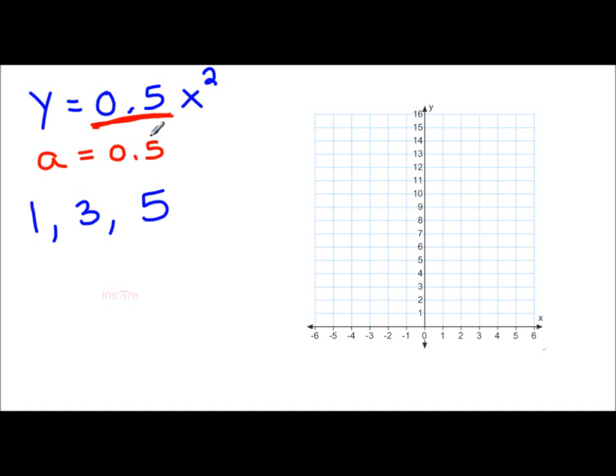And since we have an a value, we're going to need to multiply each one of the steps by a. We're going to multiply each one by 0.5. Our new step pattern then: 1 times 0.5 is 0.5, 3 times 0.5 is 1.5, and 5 times 0.5 is 2.5. So here's our new step pattern for the relation y equals 0.5x squared.